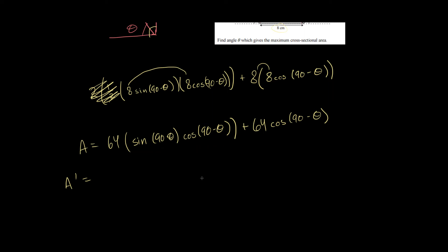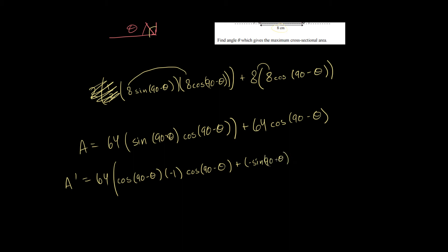And within that, we're also going to use the chain rule, because we have sine and then (90 minus theta). To do the chain rule, we're going to take the derivative of sine first, and then the derivative of (90 minus theta). So we still have our 64 out front. The derivative of sine is cosine of (90 minus theta), and the derivative of (90 minus theta) is negative 1, times the second term cosine(90 minus theta), plus the derivative of the second: negative sine(90 minus theta), times negative 1.